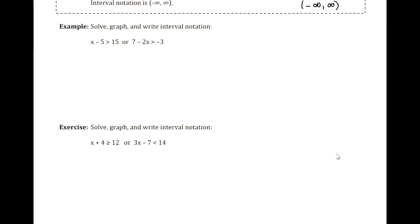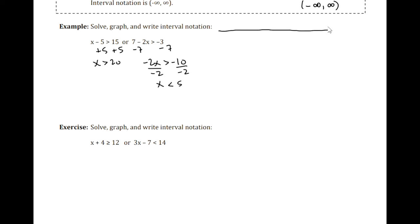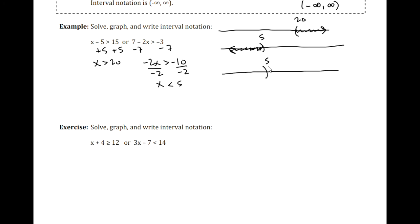For more examples, we solve the first inequality and then the second one. Remember to flip the inequality when you divide or multiply by a negative number. We graph the first one — all of the x greater than 20 — and all of the x less than 5. For the union, we combine the two graphs into one. Then we solve, graph, and write the answer in interval notation.